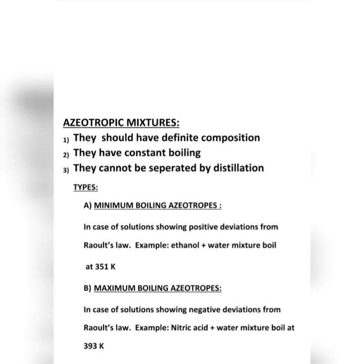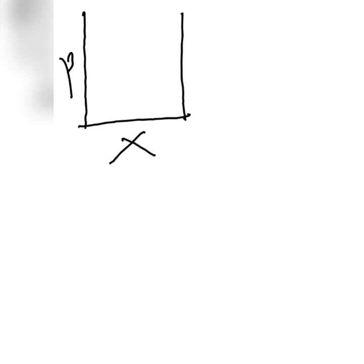Now let us understand graphically what minimum boiling azeotropes are. We take the example of an ethanol-water mixture and consider the Raoult's law deviation curve. We plot vapor pressure or partial pressure on the y-axis and mole fraction of the component on the x-axis.